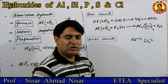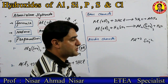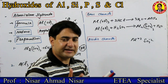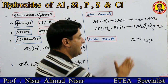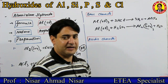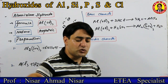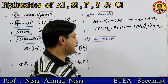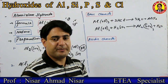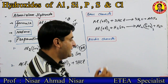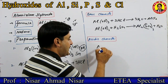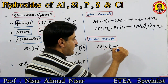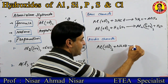اب میں بات کرتا ہوں اس کے acidic character کی — یعنی جب یہ acid کے طور پر behave کرے گا تو base سے کیسے ملے گا۔ میرے پاس ہے Al(OH)₃ — اس کو جب میں ملاؤں گا sodium hydroxide کے ساتھ تو یہ aluminate ion بنائے گا۔